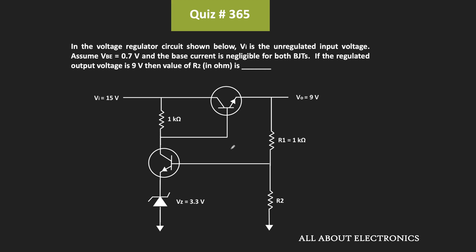Here the base-emitter voltage of both transistors is equal to 0.7V, while the base current of both transistors is negligible. We have been asked to find the value of resistor R2 in such a way that we get the output voltage of 9V.